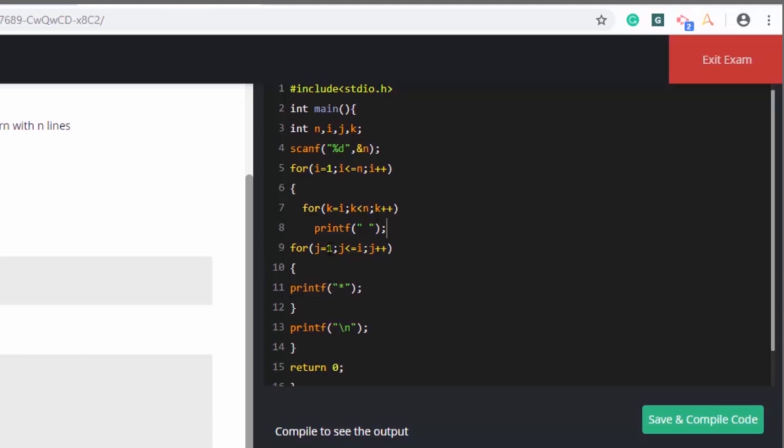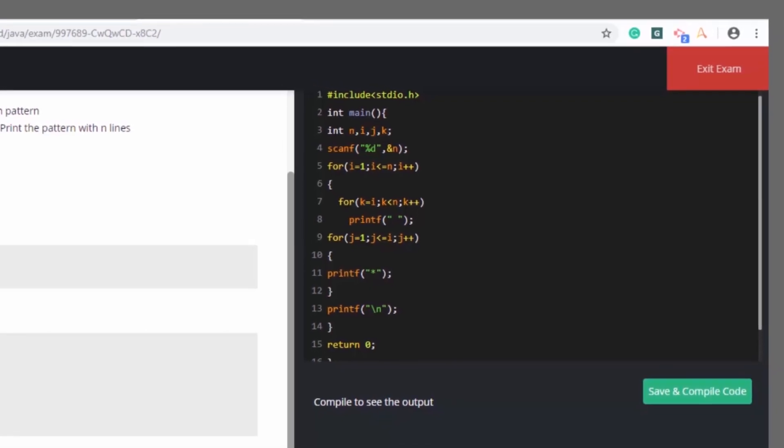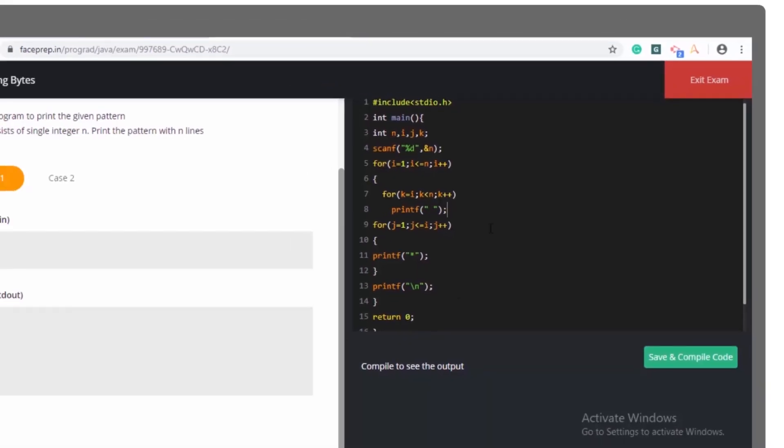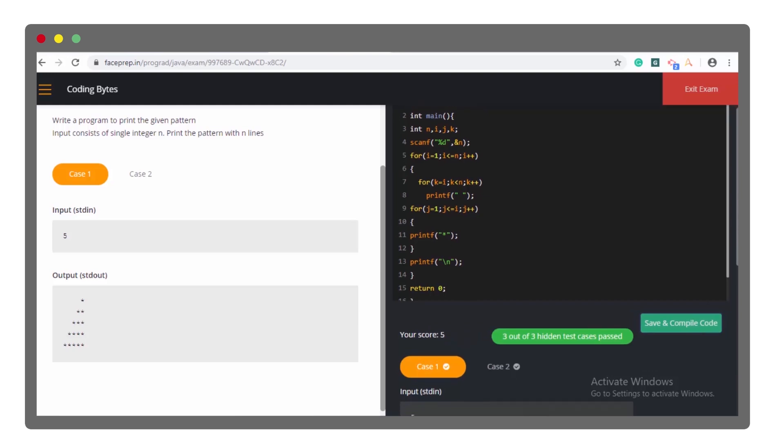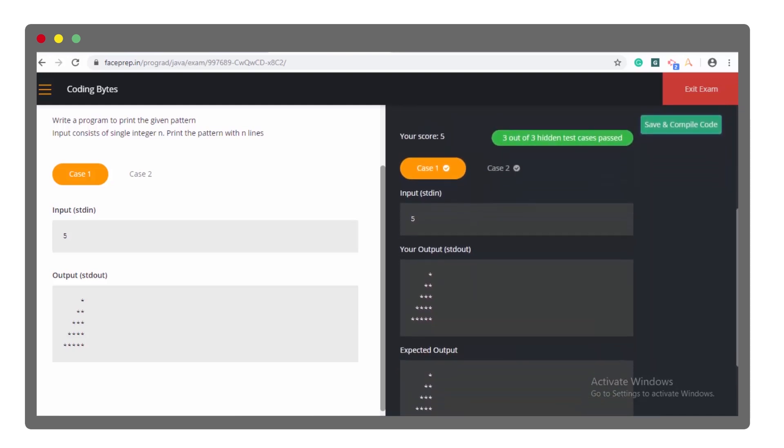Now, here, this for j equals 1, j less than or equal to i, j plus plus, one star will be printed. Therefore, the first row will have four spaces and one star. This is how the entire loop will be executed. Now, let's try to save and compile. As you can see, all the test cases are passed.